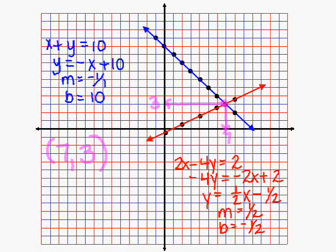Those two lines do intersect. They intersect in this point, and this point has an x value of 7 and a y value of 3. It confirms that 7, 3 is indeed our solution to this system.